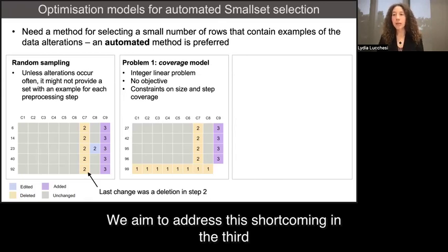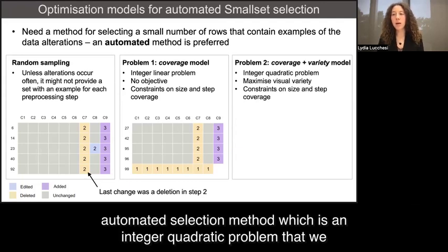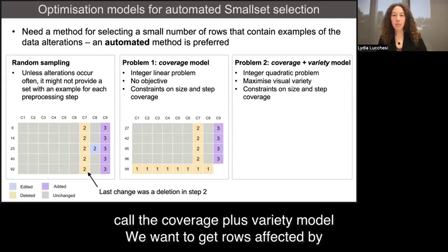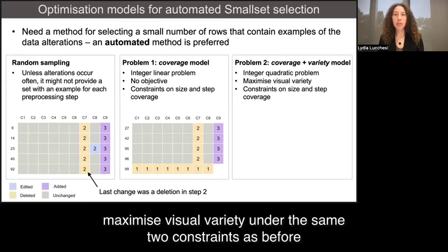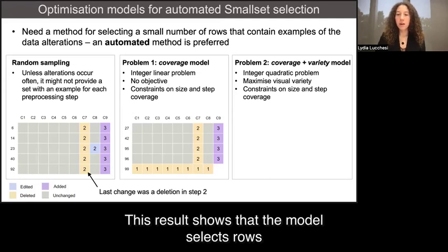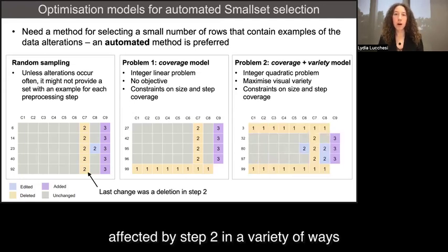We aim to address this shortcoming in the third automated selection method, which is an integer quadratic problem that we call the coverage plus variety model. We want to get rows affected by the steps differently or have visual variety, so the objective is to maximize visual variety under the same two constraints as before. This result shows that the model selects rows affected by step two in a variety of ways.